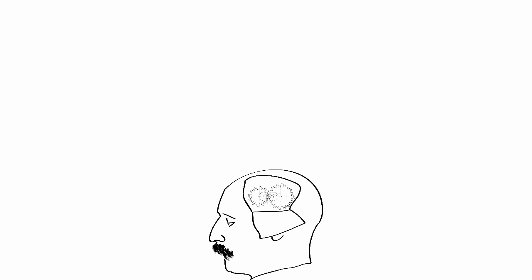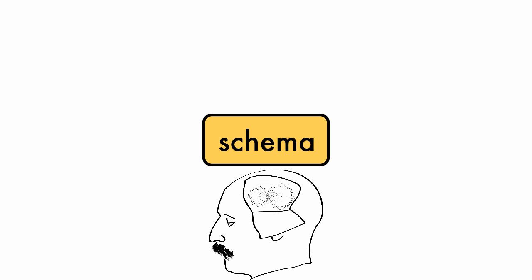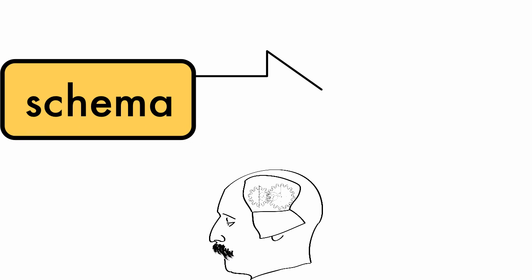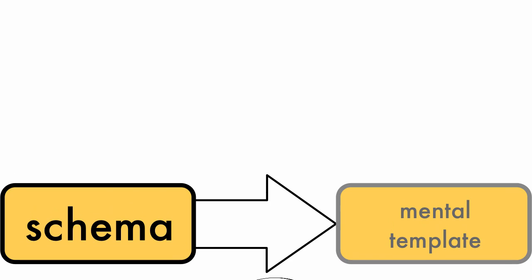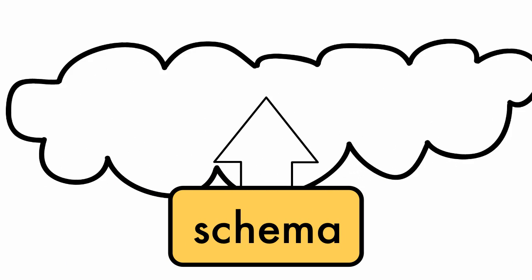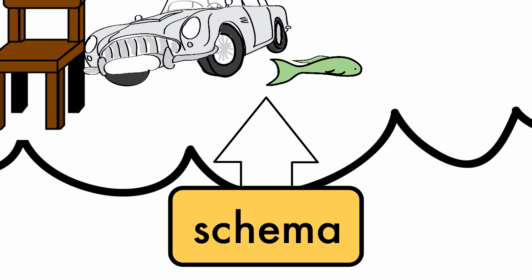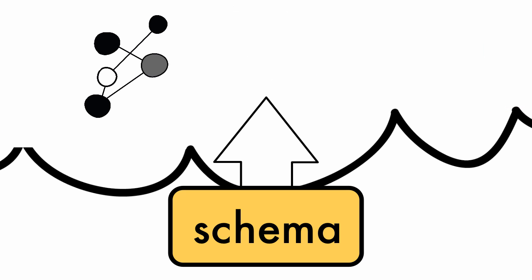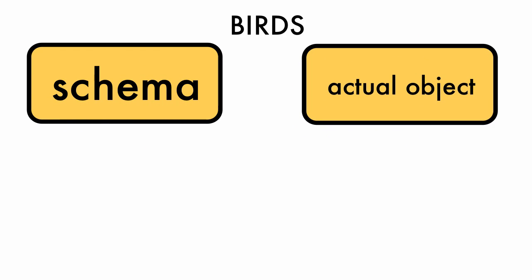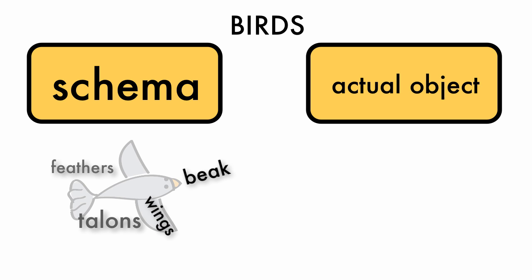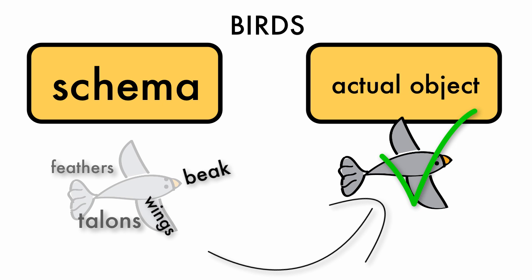A schema is an organized pattern of thought that establishes a mental framework that represents some aspect of the world. We develop schemas for all types of items and activities, from simple items such as a chair, a car, fish, bird, or house, to complex ones like the chemical bonds between atoms or the seating in the House of Representatives. In short, we develop cognitive patterns for many things, and we then use the schemas we have developed as a means to compare new information against.